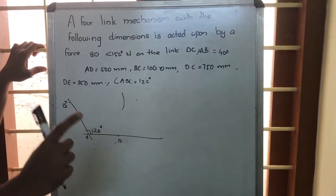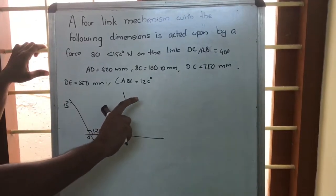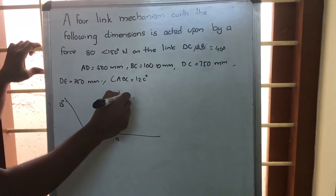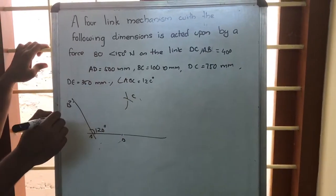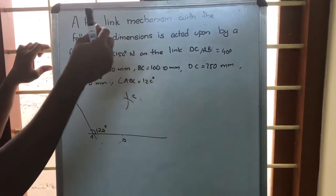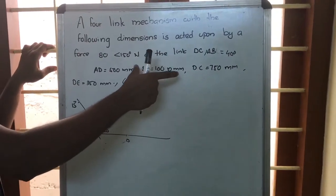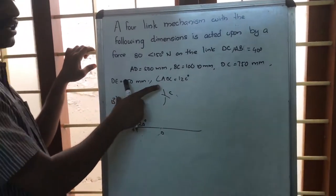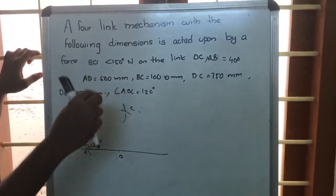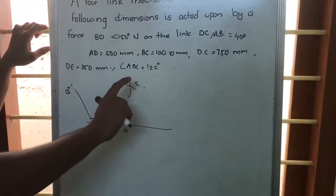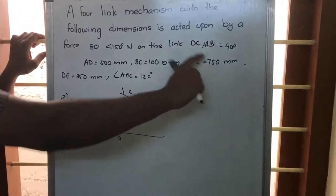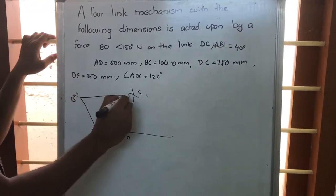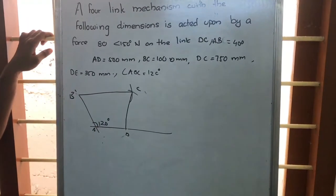Similarly, with D as center and 7.5 centimeter radius, draw an arc. Those two arcs will intersect at a point which we call point C. To summarize: take 10 centimeter in compass with B as center and draw an arc; then with D as center and radius 7.5 centimeter, draw another arc. We will get point C, and joining the points, we get our complete figure.